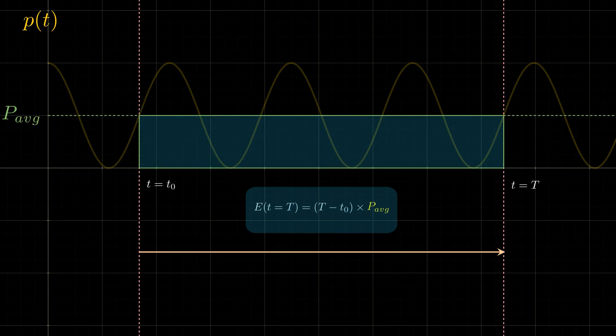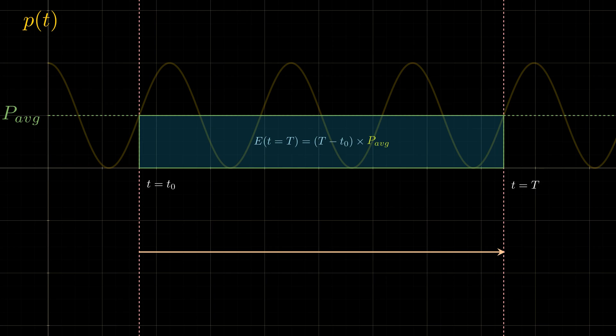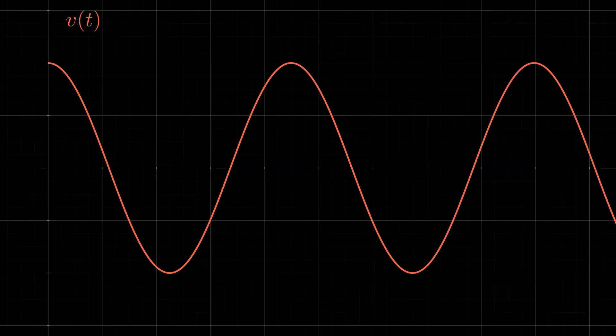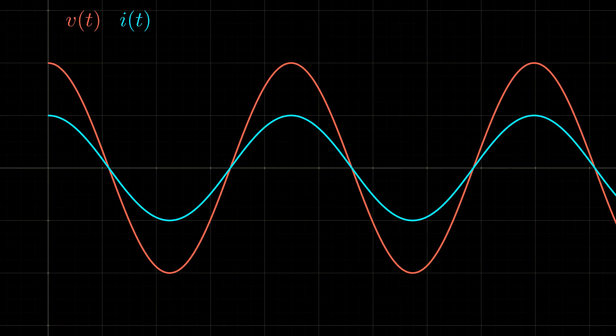This means that the average power is enough information to know how much energy is absorbed by the resistor. So instead of handling a sinusoidal wave varying with time, we can just track the average value. But in electrical engineering, we work a lot with current and voltage. So can we also find averages for these variables to avoid using sinusoidal functions and still conserve the energy transfer information?